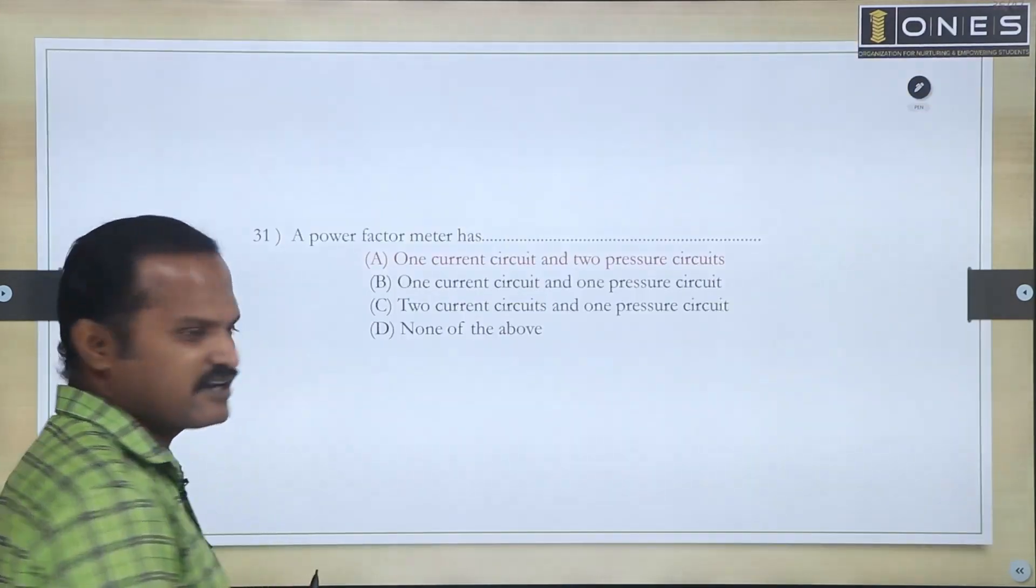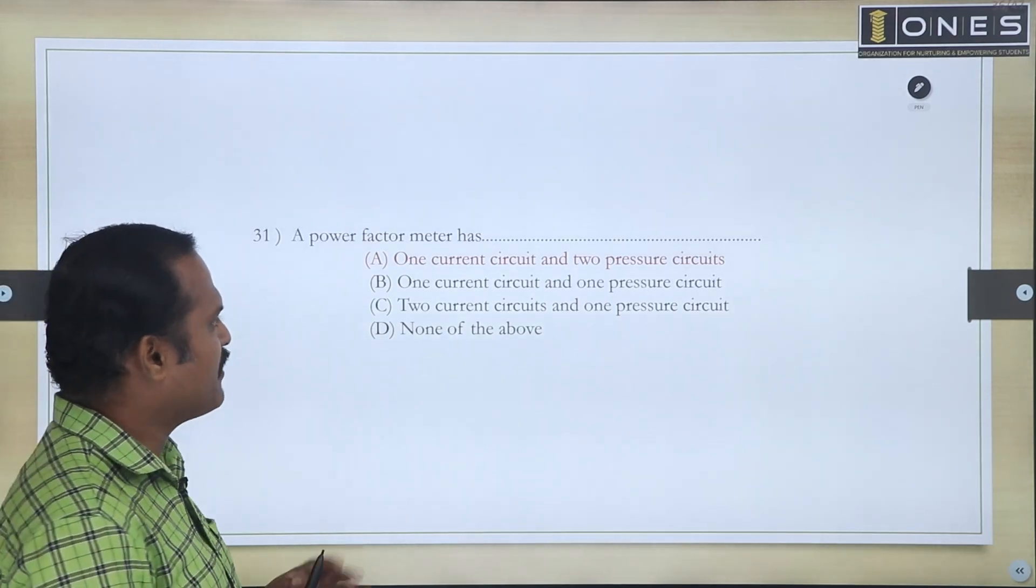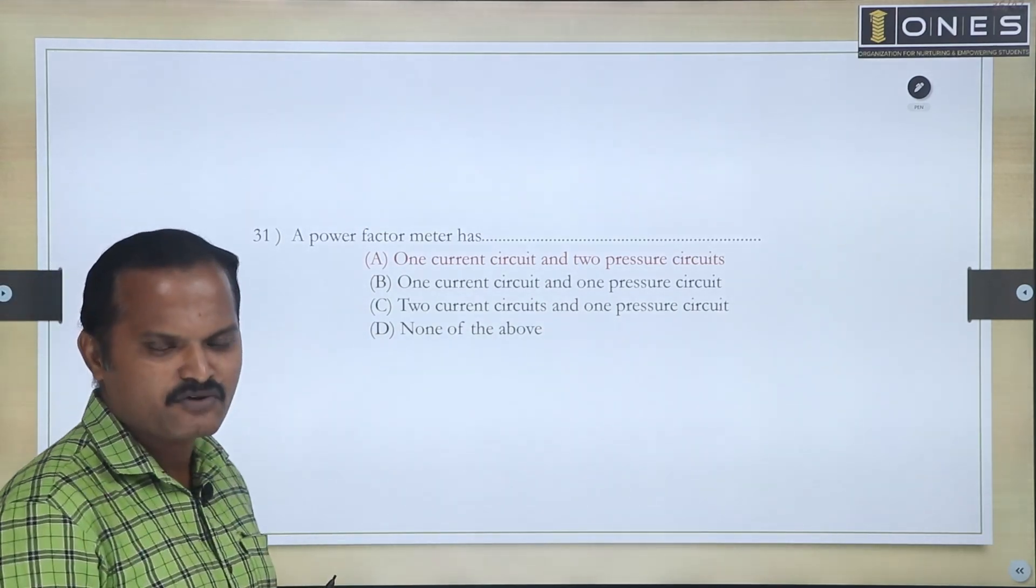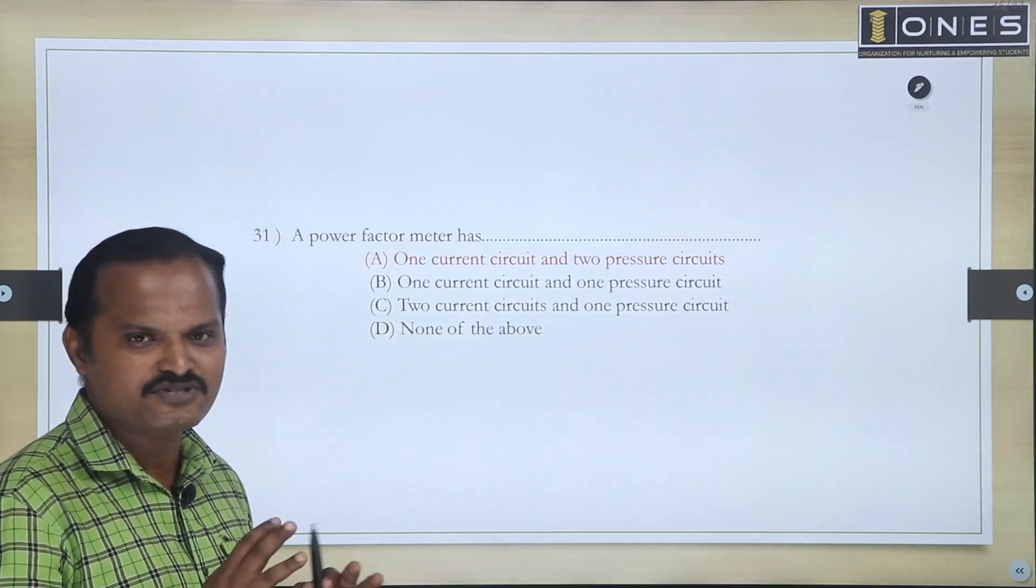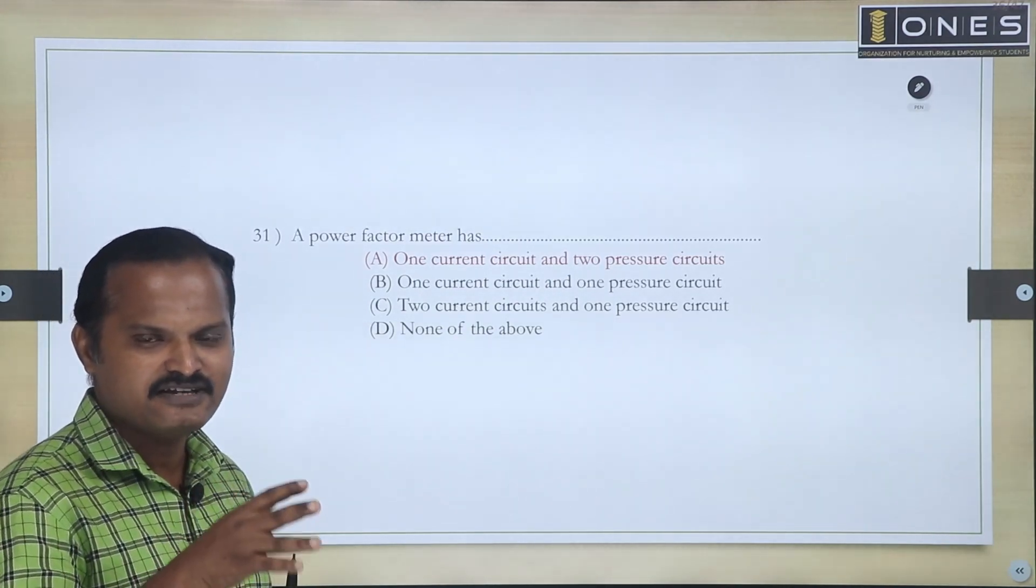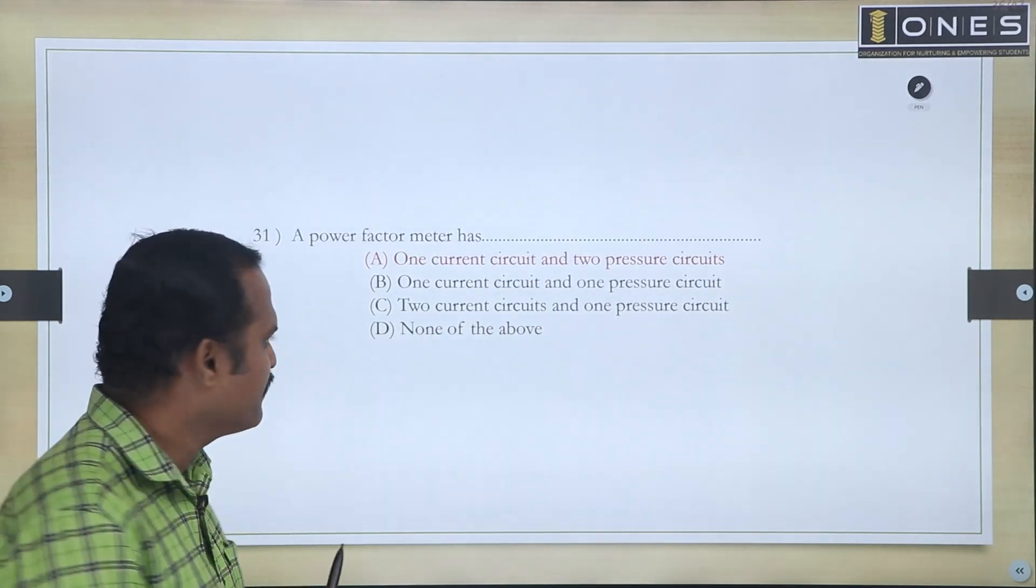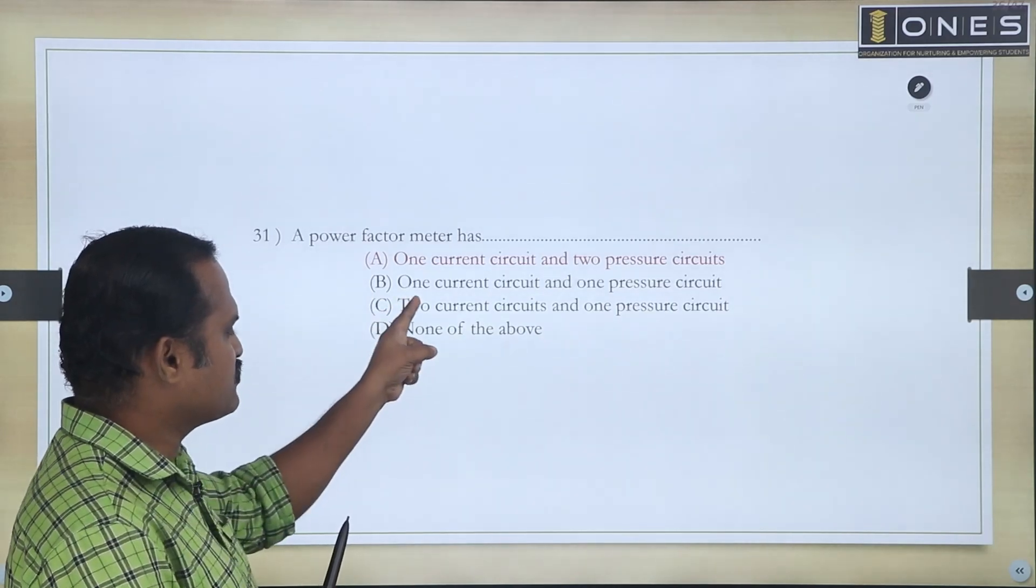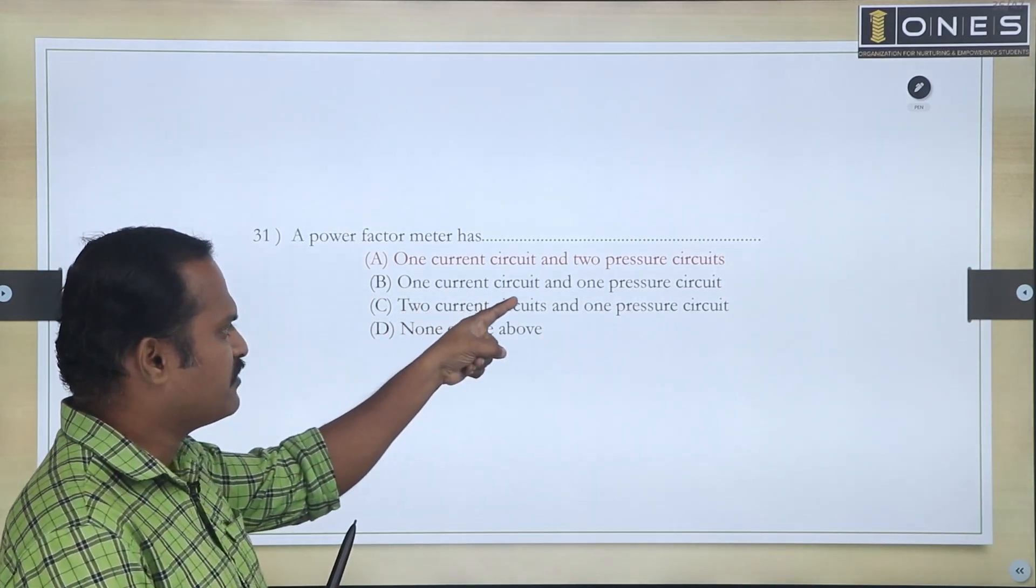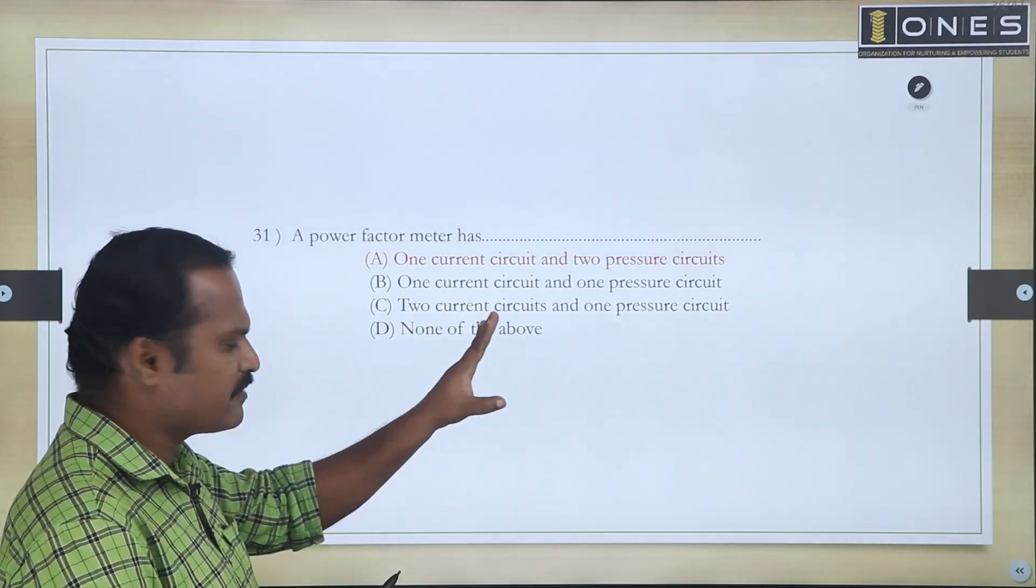First question in this session: a power factor meter has what parameters? Current, voltage, then cosine of the angle between your voltage and current. So the answer is one current circuit and one pressure circuit is okay, pressure circuit is okay.